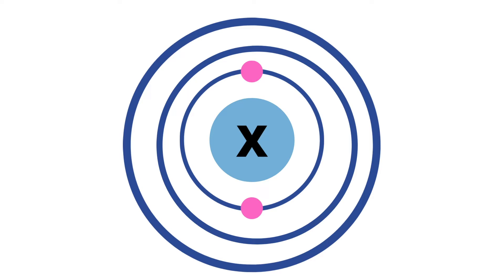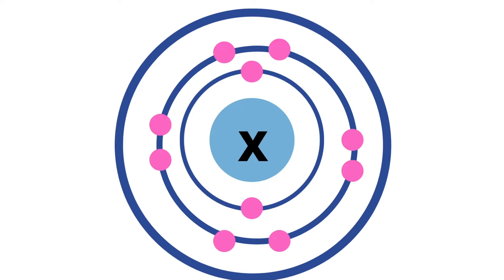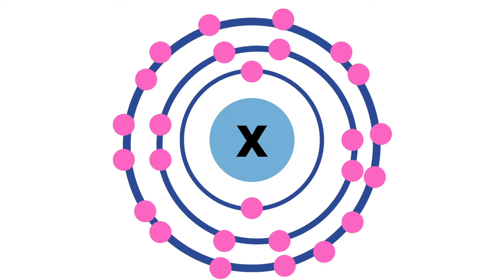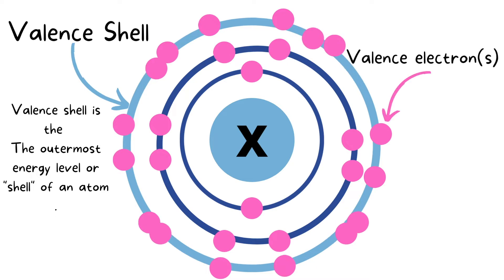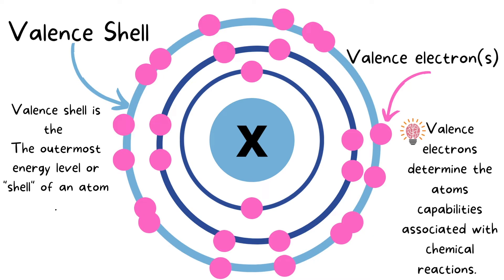The first energy level can only hold two electrons. The next can hold up to eight electrons. The third can hold up to 18. The outermost energy level is referred to as the valence shell, and the electrons on this valence shell are referred to as valence electrons.